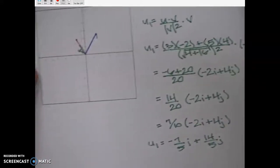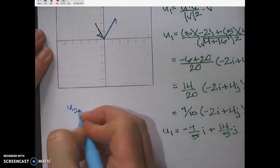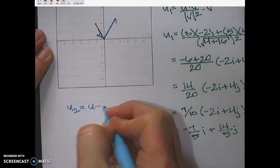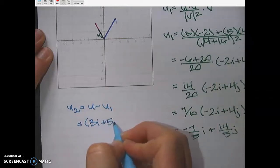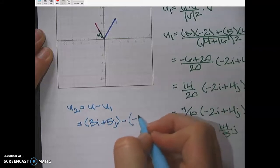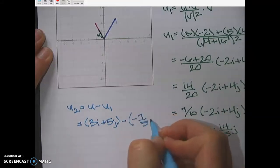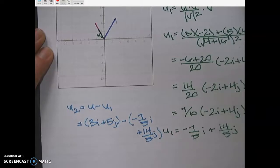So then the next thing is to find u2, and so u2 will be u minus u1. So we'll have 3i plus 5j minus negative 7 fifths i, plus 14 fifths j. All right, I'm going to pop out and fix that. I'll be back in a minute with you too.